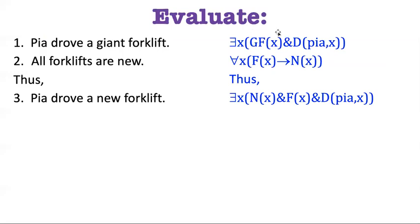Like, let's say that we don't separate out giant and forklift as separate predicates. We just use GF for being a giant forklift. Well, then when we encounter forklifts down here, we need a new predicate like F. And once these are separate predicates, there's not a commonality, this inference doesn't go through.